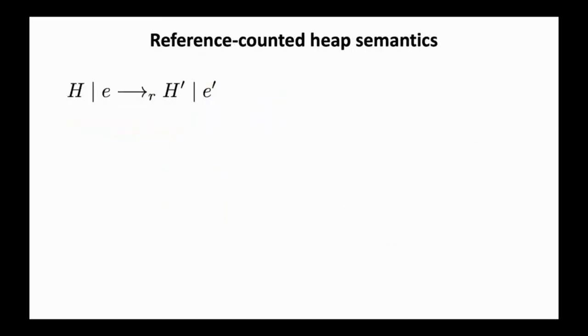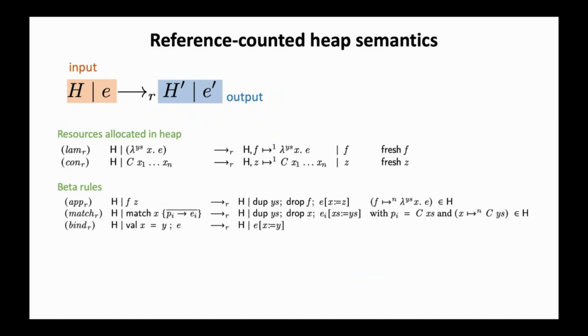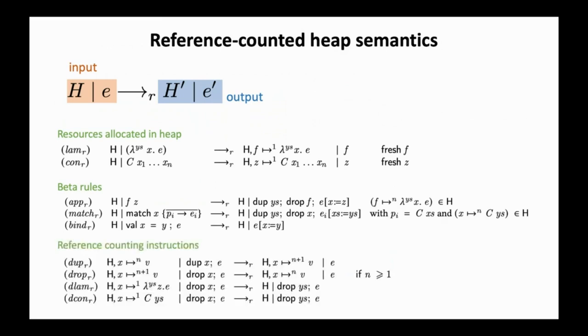Now we can define our target semantics of a reference counted heap, so sharing of resources becomes explicit. The judgment says that an expression E under a heap H steps into another expression E prime under the heap H prime. Specifically, we have three sets of operational rules. The first set of rules for Lambdas and Constructors allocate resources in the heap. The second set of rules does beta reduction for applications, pattern matches, and variable bindings, with necessary reference counting instructions inserted. For example, for Lambdas, since its ownership is passing-based, we will dump all its resources in the generated expression. The final set of rules reduces reference counting instructions in a standard way, where dump increments references, drop decrements references, and when the reference count drops to zero, we free the resources from the heap and recursively drop its children.